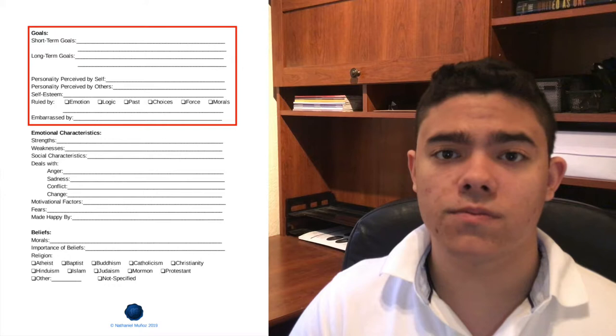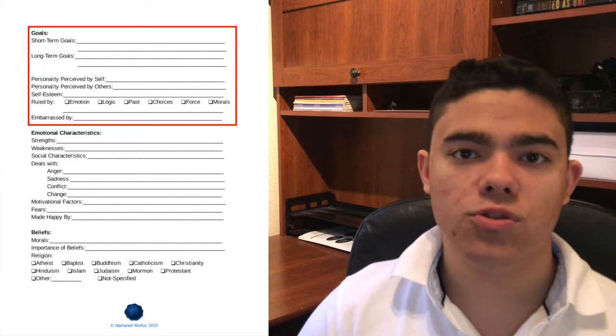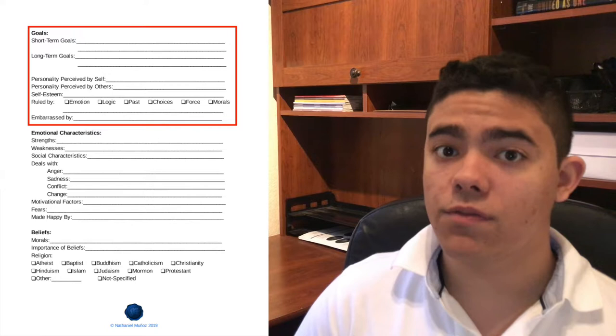Next, we have ruled by. I put ruled by as a section in which you can check which factor controls your character's decisions. This is very important because your characters are not all going to react the same way or have the same mindset inside them. You're going to want to make sure that if they're controlled by emotion, you check that box. If they're controlled by logic, past, choices, a force, or morals.